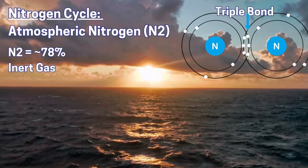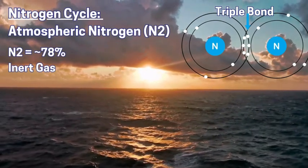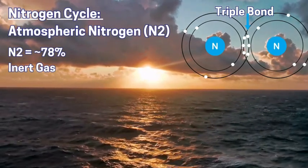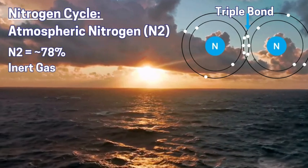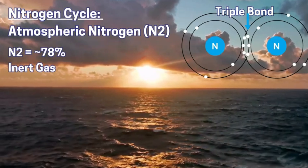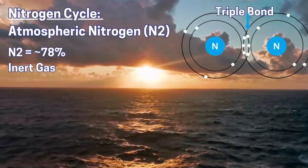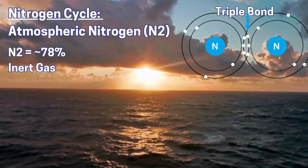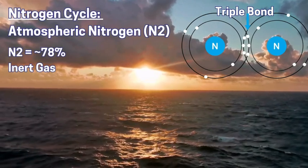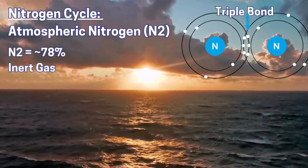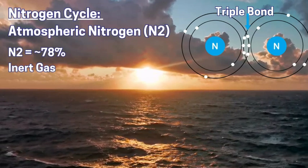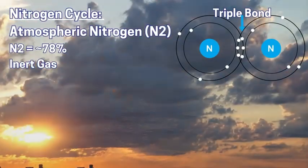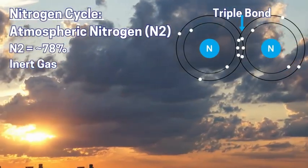Nitrogen is a macronutrient — a large amount is required by vegetation on Earth to sustain life and growth. It is a key part of biomass requirements, and therefore it is important to understand that the majority of nitrogen comes from the atmosphere.